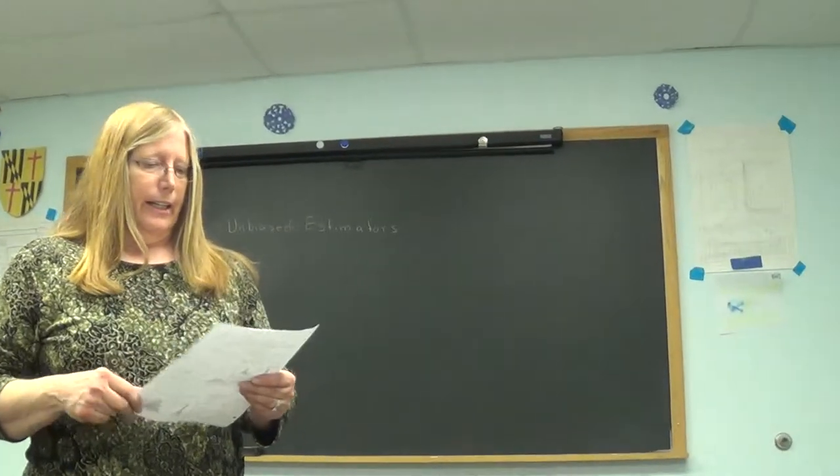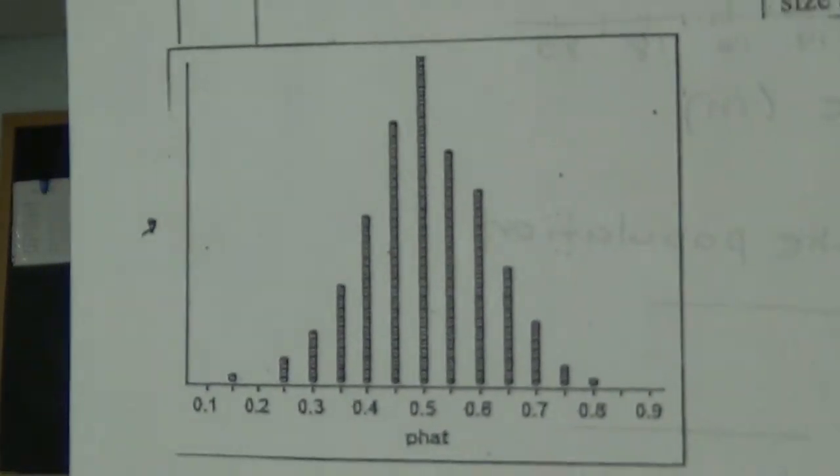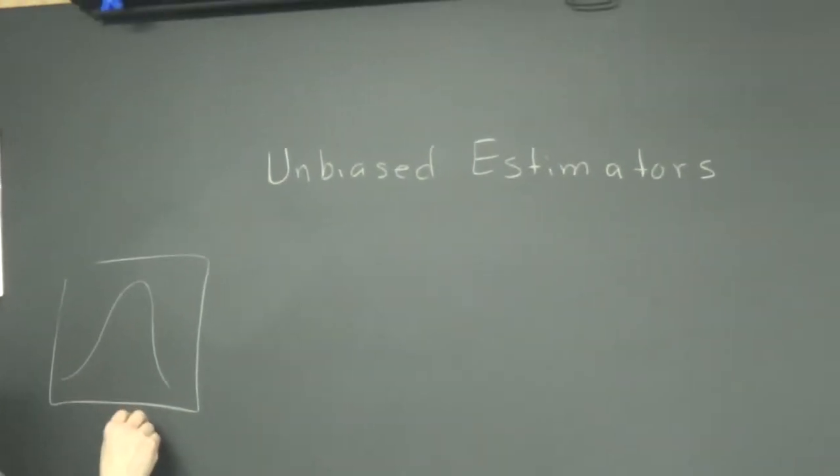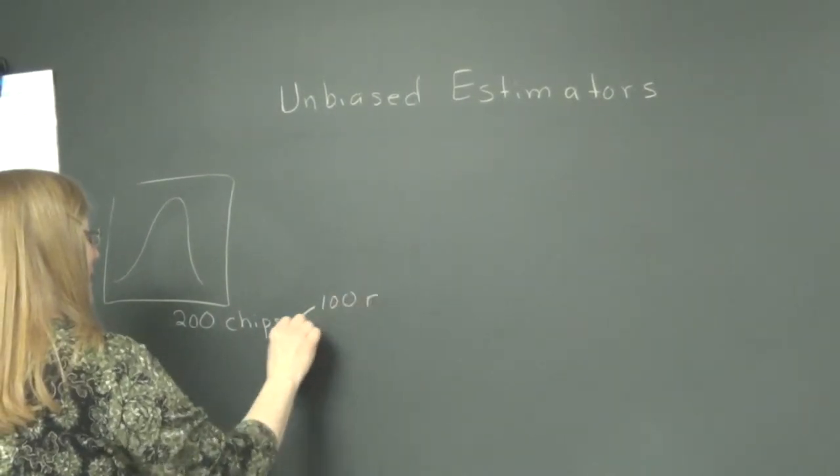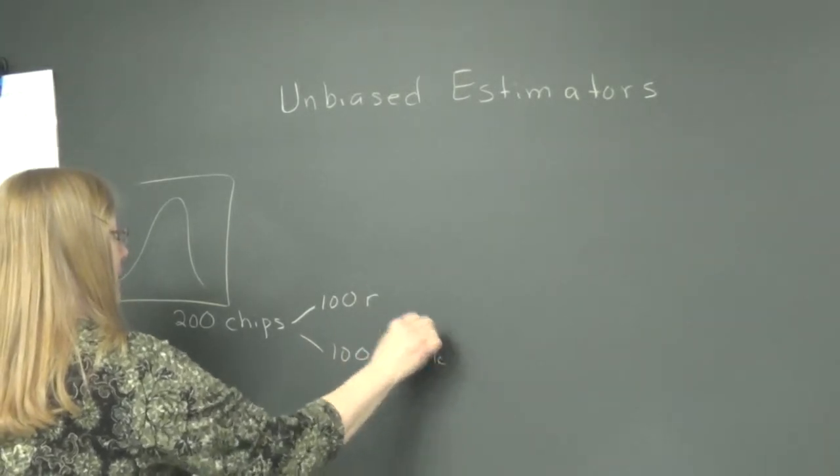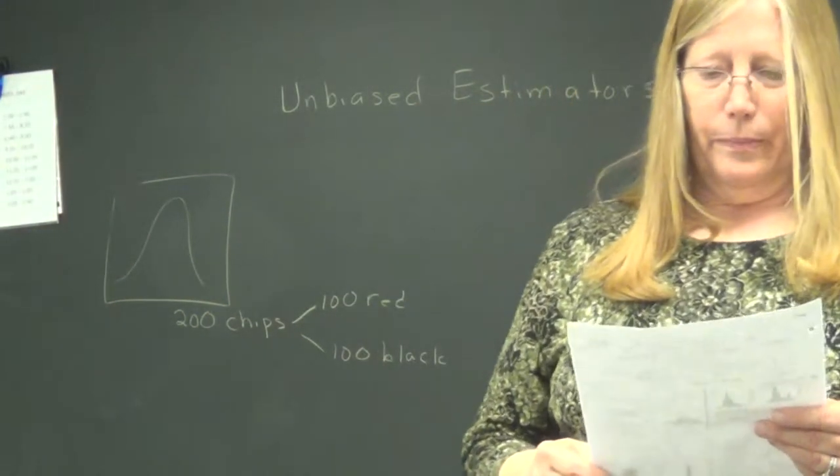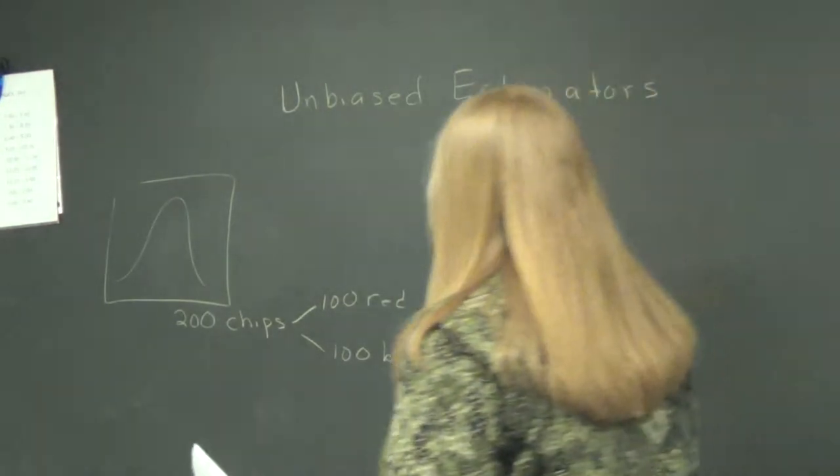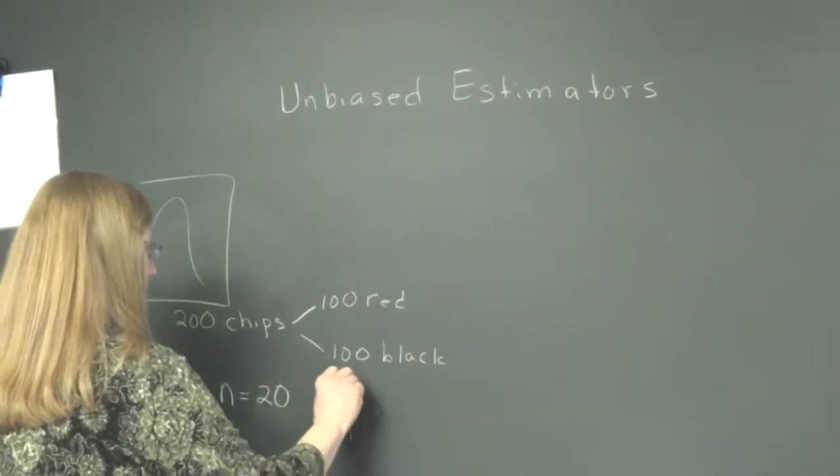I want you to look at the graph there, and that's actually a graph that I think we had on our day one notes. And it was when we had a group of chips. I want you to write that it was 200 chips, like poker chips, where 100 were red and 100 were black. And then I think 20 were taken. And everybody, they kept taking 20 and seeing what proportion were red. So the sample size, n, small n, is 20, and p was proportion red.